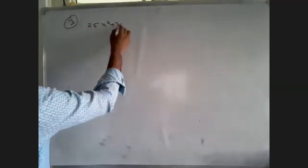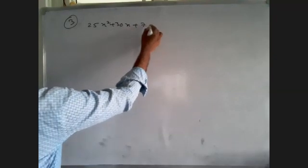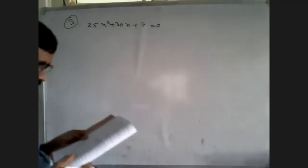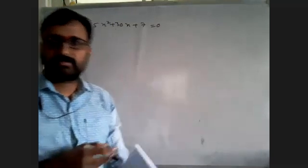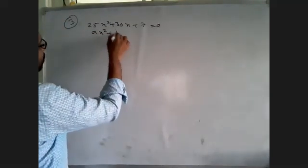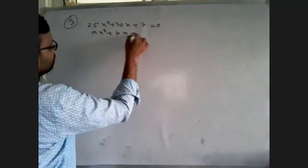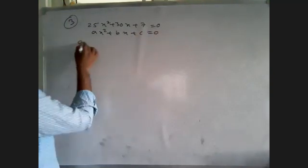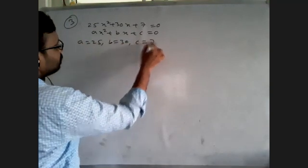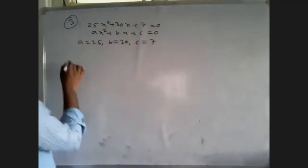Question number three: 25x² + 30x + 7 = 0. Comparing with the standard form x² + Bx + C = 0, A is equal to 25, B is equal to 30, C is equal to 7.